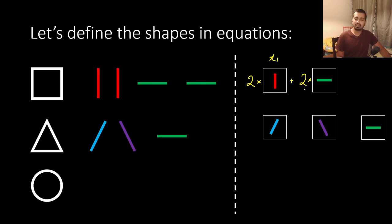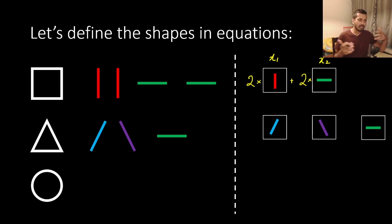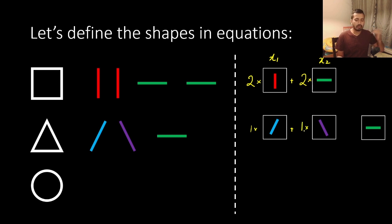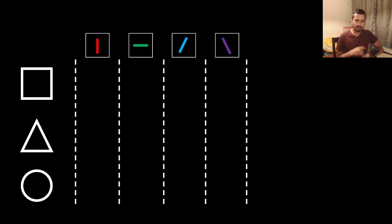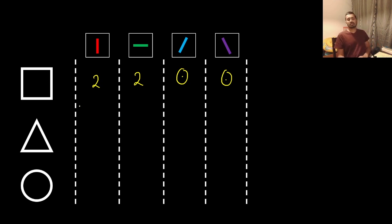We can believe that this is a linear balance. If we have a vertical line, we can use x1 and x2. So we can use 2x1 times 2x2. We can use x2 as well. We can use algebraic terms. So if we have a vertical line, we can use x1. One times forward slash plus one times backward slash plus one times horizontal line — this is exactly how we use the definition.